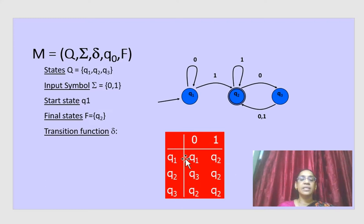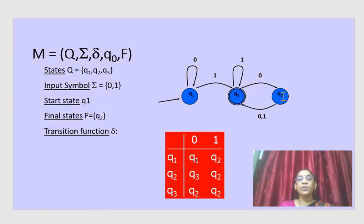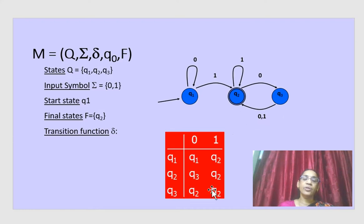In the transition table: from q1 with input 0, it stays in q1. From q1 with input 1, it goes to q2. From q2 with input 0, it goes to q3. From q2 with input 1, it returns to q2 — the same state. From q3 with both input 0 and 1, it goes to q2.